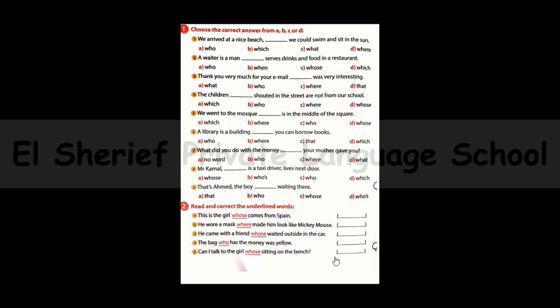Number nine: That's Ahmed, the boy ___ waiting there. The answer is: 'the boy who is waiting there' — letter D. Now read and correct the underlined words. Number one: This is the girl ___ comes from Spain. It should be 'who.' Number two: He wore a mask ___ made him look like Mickey Mouse. It should be 'which.' Number three: He came with a friend ___ waited outside in the car. It should be 'who.' Number four: The bag ___ has the money was yellow — it should be 'which' or 'that.'